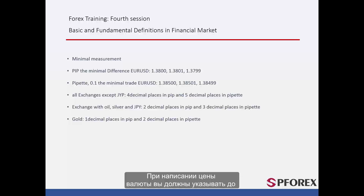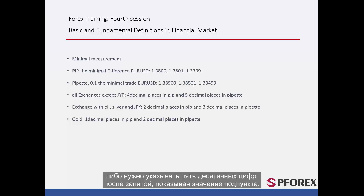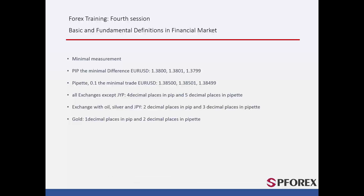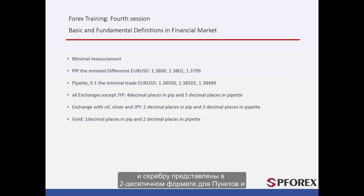When writing a currency as a symbol, you must do it to a 4 decimal place figure representing the PIP value, or a 5 decimal place figure representing the pipette value. All other symbols with JPY or against oil and silver are represented in either a 2 decimal place format for PIP and a 3 decimal place format for pipette.